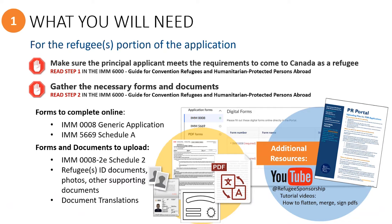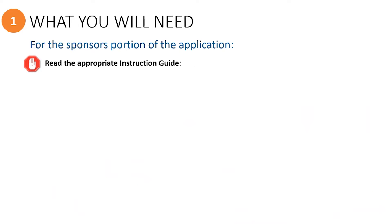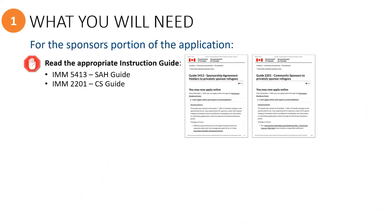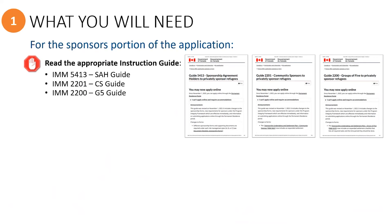Now let's take a look at what you will need for the sponsors portion of the application. In this training series, we will not be explaining how the sponsorship forms are to be filled out. However, you can refer to the appropriate instruction guide, which can be found by typing the appropriate guide number into Google, such as the IMM 5413 guide for sponsorship agreement holder organizations (SAHs). Community sponsor groups will use the IMM 2201 guide, and groups of five sponsors will use the IMM 2200 guide.